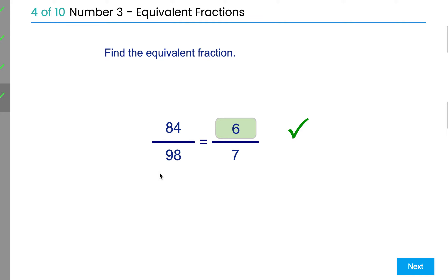Trickier one, that one. So if you need to, you can use a calculator on these to work out what's happened to the bottom number. Just divide one number by the number on the other side to see what's happened to it.